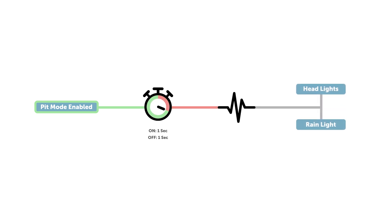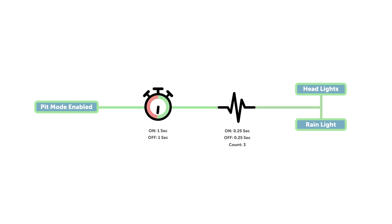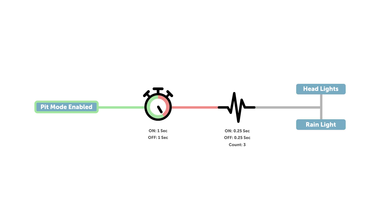The pulse function will look for a rising edge on its input, meaning its input has switched from off to on, and we've configured it to output three 0.25-second-long pulses spaced 0.25 seconds apart when it sees this. When the pit mode enabled input is seen from the ECU, the timer will switch on, which will trigger the pulse function to quickly flash the headlights and rain light three times. The timer output switches off after one second, remains low for one second, then switches high again, triggering the pulse output and flashing the lights three times again. This gives a distinctive three pulses of light, then a longer delay, then another three pulses of light, and that will repeat.